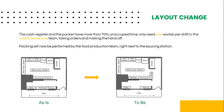Allowing the workers to prepare half-trays creates the possibility of further adjusting stocks to the demand. As noted before, the cash register and the packer have 70% unoccupied time. Therefore, we decided that we only need one worker per shift in the customer service team, taking orders and performing the handoff. We also moved the packers to the food production team. To complement that measure, the packing will now be performed by the food production team right next to the sourcing station. The layout is slightly different, as shown in the picture on the right.